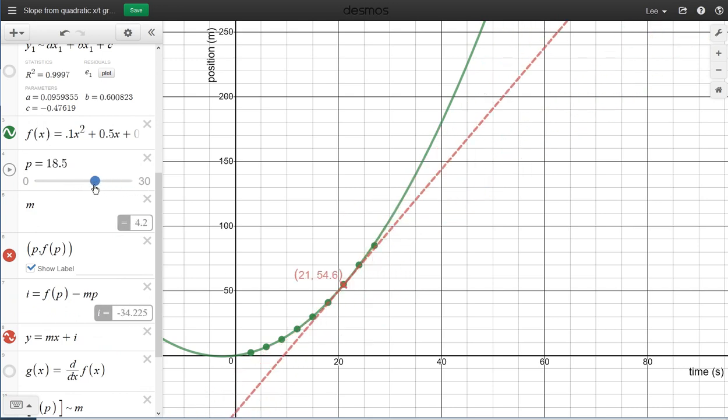So the red dashed line is the tangent. I can pick any point along here. And now when time is equal to 22.4, the slope is 4.9. So I can enter that in a new data table.